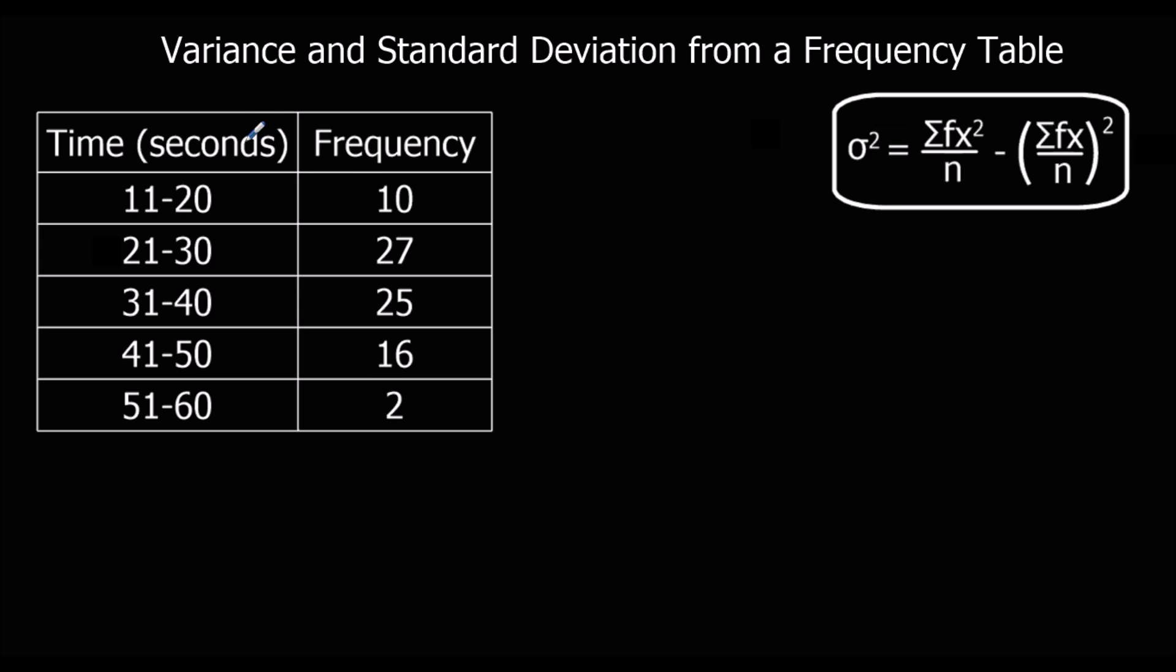So we're going to call the midpoint x and frequency is f. And we've got the formula here. So the variance, which is little sigma squared, is going to be the sum of fx squared over n minus the mean squared. So the mean of the squares minus the square of the mean. The midpoint is going to be our x and the frequency is our f. So we're going to have to work out fx and fx squared.